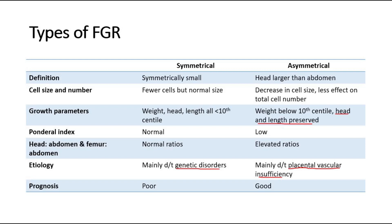Overall, the prognosis for the symmetrical type is complicated with poor neonatal outcomes, whereas for the asymmetrical type, it is uncomplicated and the prognosis is better compared to the symmetrical type.